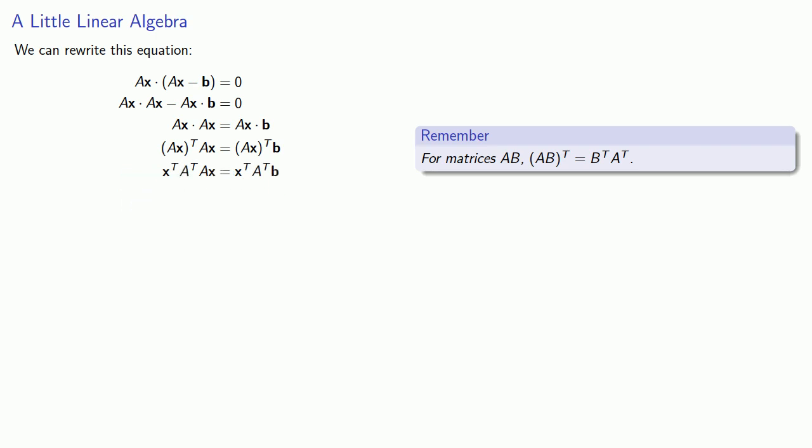And at this point, we'll invoke something called left cancellation. And the thing to notice here is that X^T applied to a vector is the same as X^T applied to a vector. Well, a solution will occur when the two vectors are the same. So we want A^T Ax to be A^T b.